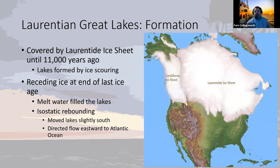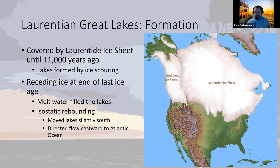Getting into how the Great Lakes formed — the Laurentian Great Lakes are glacial lakes. They were covered by the Laurentide Ice Sheet, which I have in this map over here, showing the extent of that ice sheet, which covered this area until about 11,000 years ago. The lakes were formed primarily by this huge miles-deep ice sheet essentially just scouring out parts of the land.